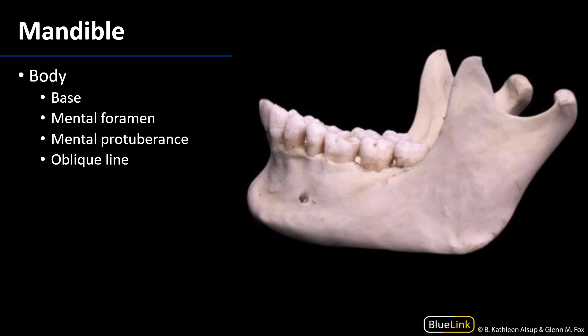And then finally the mandible, the only intentionally kinetic bone of the skull. We'll hear a lot about the mandible when we discuss mastication, but for now we'll talk about the body of the mandible. The body of the mandible meets the ramus of the mandible at the angle of the mandible. The body is supporting alveolar processes, and those alveolar processes of the mandible and the alveolar processes of the maxilla are going to be important for this session because the buccinator muscle attaches to them.